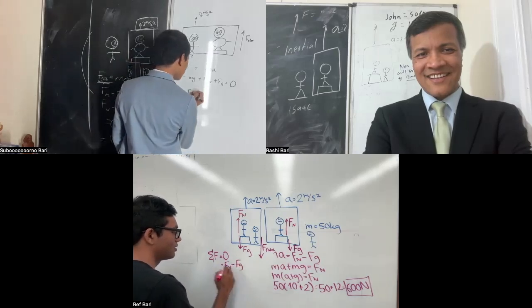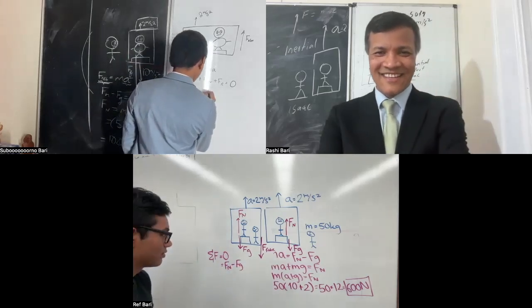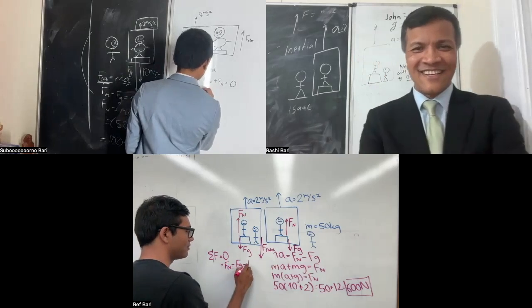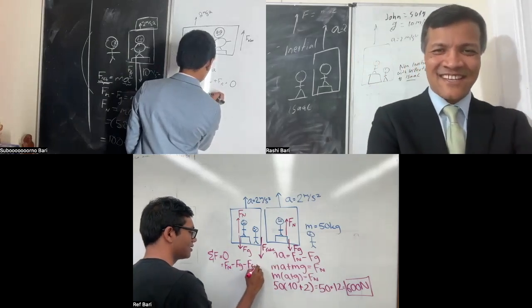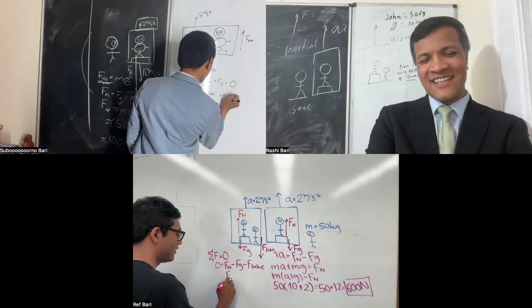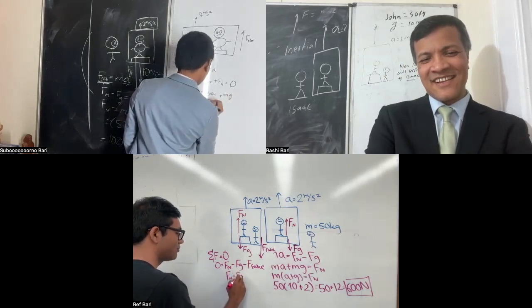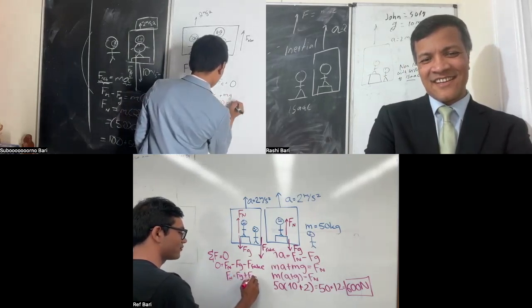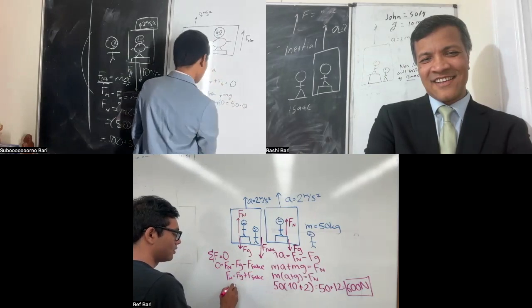You said that exactly as I wrote down zero. FN minus FG minus Ffake is zero. So now I can just solve for FN. FN is FG plus the fictitious force. Yeah, it's the exact same answer.